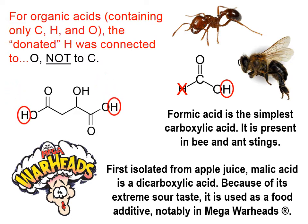Here's another example — malic acid. There are several H's in malic acid, and if any are going to be donated, it would be the two connected to oxygens on the left and right sides of the molecule. There are also two H's not shown but understood to be there, connected to the central carbon atom — above and below that bond — because carbon has four bonds. Those two H's will not be donated; only H's connected to oxygens are donated.